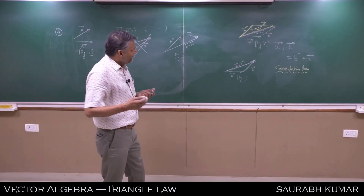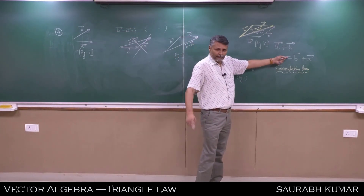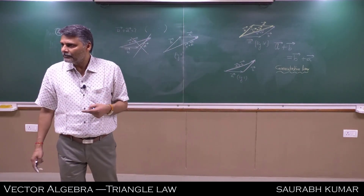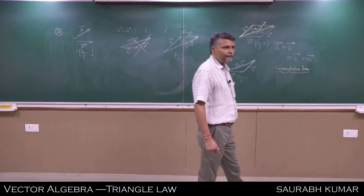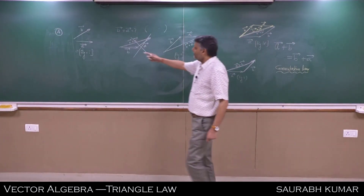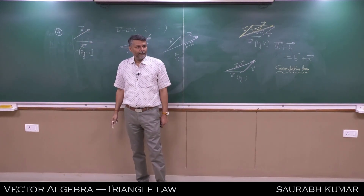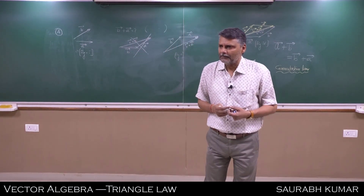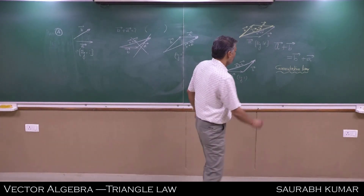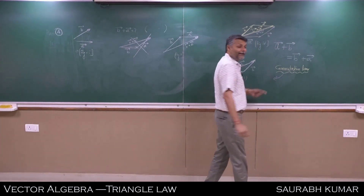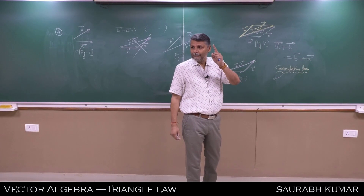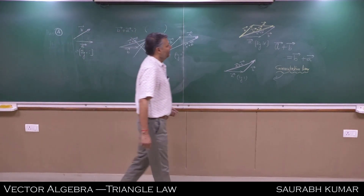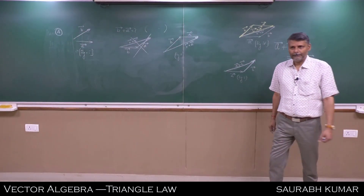Just before this figure we wrote: choice of first vector changes the resultant. Now from this diagram we understand that the choice of first vector does NOT change the resultant. Out of the two vectors, any one can be taken as the first vector. This is what commutative law means - we can take any vector as the first vector.